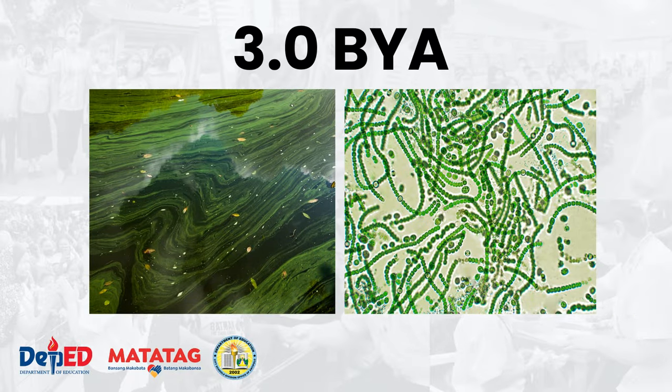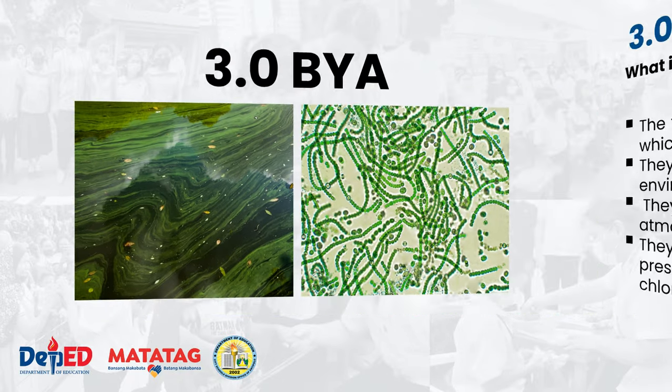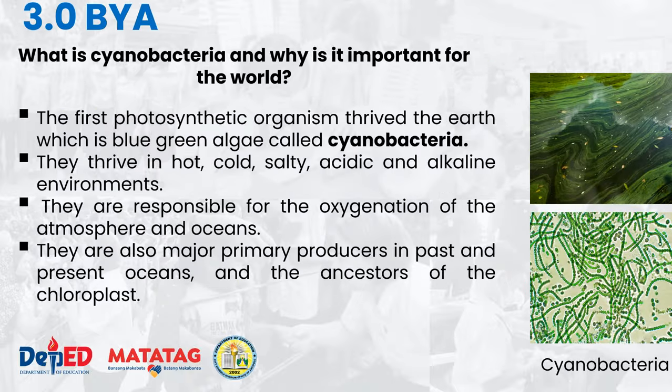3.0 billion years ago, we have cyanobacteria. Cyanobacteria were once part of what is called blue-green algae. They thrive in hot, cold, salty, acidic, and alkaline environments. They are responsible for the oxygenation of the atmosphere and oceans, and they are major primary producers from then until now for the oceans. They are also the ancestors or ninuno of the chloroplast.